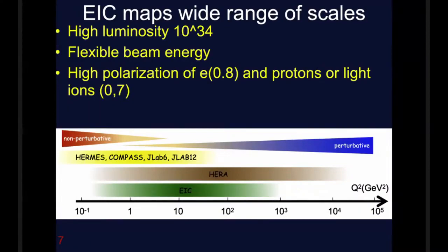The EIC maps a very wide range of scales. Here we're comparing the scale, the Q-squared which you can think of as the resolution scale, the inverse size that you can look at, of the EIC compared to other colliders. We see we already have very nice measurements of the non-perturbative regime going on at COMPASS and JLab. We've already seen the HERA detector has already measured over a large range of Q squared, but the EIC will have very high luminosity, flexible beam energy and crucially it will have the polarization of both the electrons and light ions. This really lets it get at the spin structure which was not possible for the HERA machine.